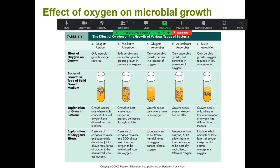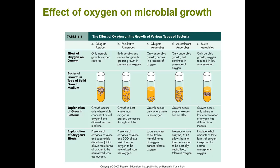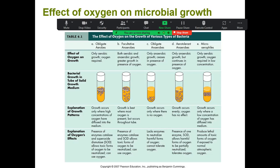Lastly, microaerophiles are aerobes — they do require oxygen to grow — but they don't like full oxygen at 20–21%. They prefer to grow in areas of reduced oxygen, typically between 2% and 10%. Many bacteria in your stomach, such as Helicobacter pylori, are microaerophiles. Their growth is best in the middle of the thioglycolate tube; as you go down or up the tube you see less and less growth.